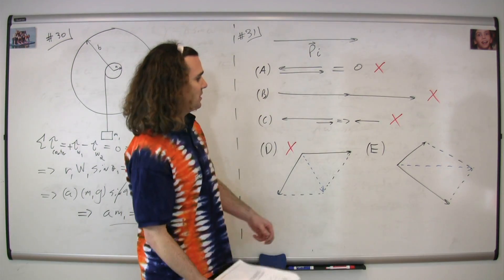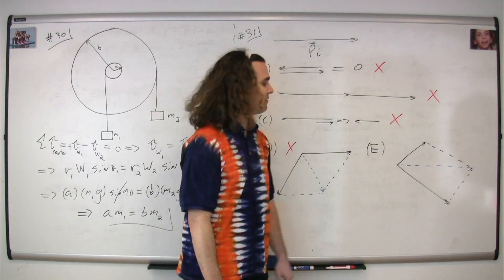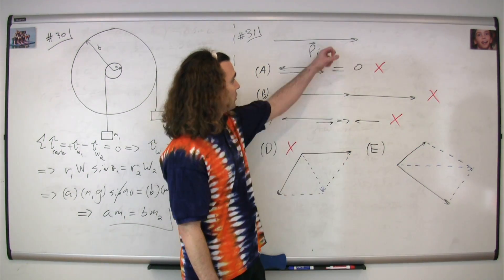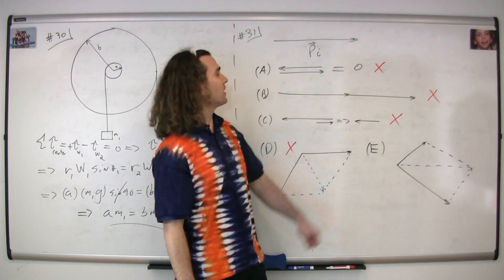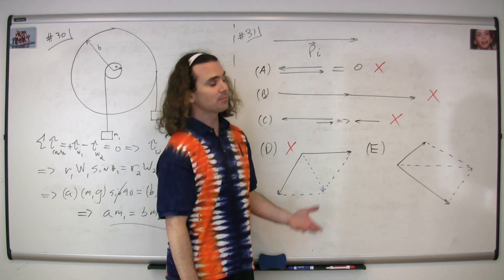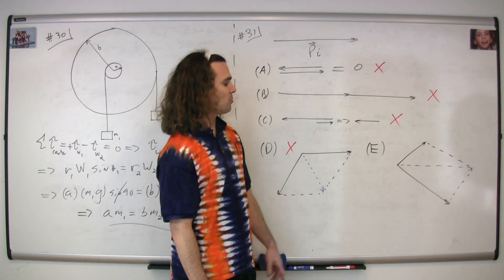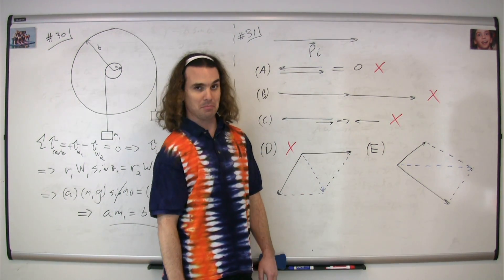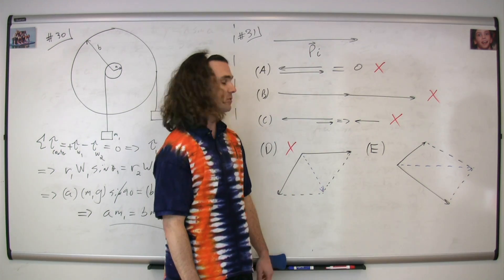In E, you can see that, again, when we do tip to tail vector addition, the resultant vector looks pretty close to what it was for the initial momentum. So the final momentum equals the initial momentum, and E is the one that best matches. So the correct answer is E.